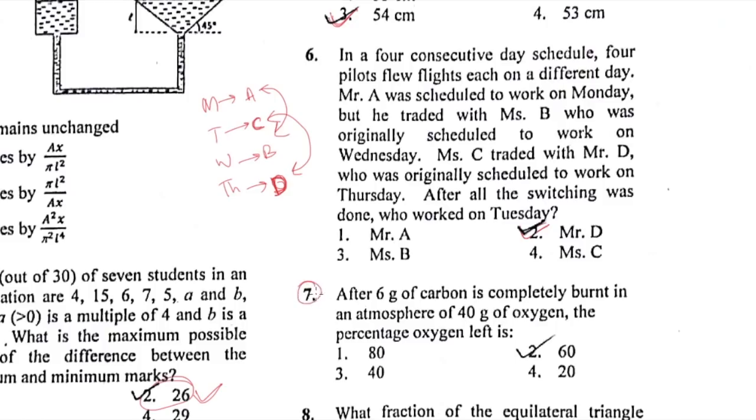This particular question is very simple. You all must have done this in class 12. It's a stoichiometric problem. The correct option is 60%. It's pretty simple. Take the equation carbon plus O2 gives CO2, then balance with mass conservation. Take the mass relation, calculate percentage, and you'll get the answer.